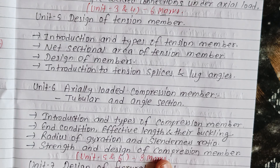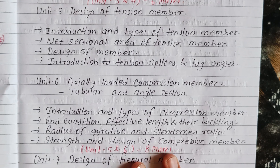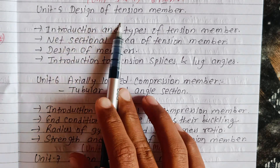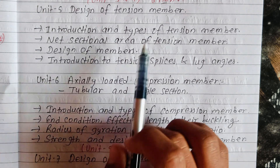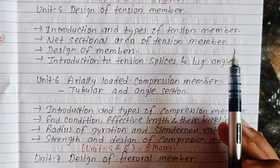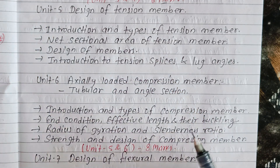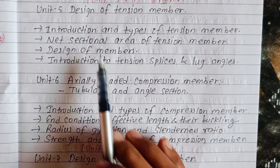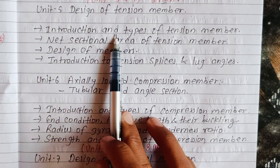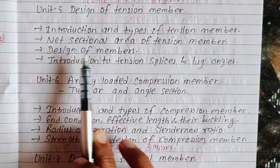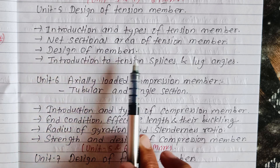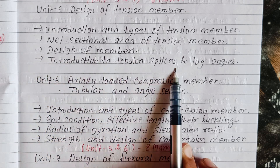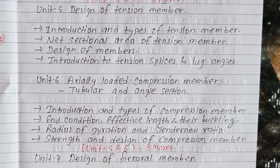Unit 5 covers design of tension members. Topics include introduction and types of tension members, net sectional area of tension members, design of tension members, and introduction to tensile splices and lug angles. This unit carries 8 marks.